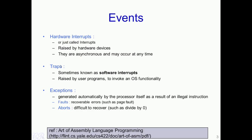Besides hardware interrupts there are traps and exceptions. Traps are sometimes known as software interrupts. They are raised by user programs in order to invoke some operating system functionality. For instance, if a user program wants to print something on the monitor, it would invoke a trap which essentially would be a system call to the operating system, and the OS will then take care of writing the particular data onto the screen.